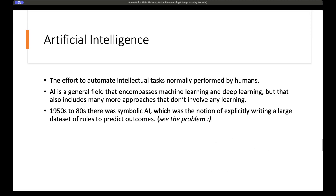So what is artificial intelligence? Artificial intelligence is simply an effort to automate intellectual tasks normally performed by humans. It encompasses machine learning and deep learning, but it also has aspects that do not involve learning at all. This is what used to happen back in the 1950s — early approaches involved programs written with explicitly hard-coded large sets of rules and expected outcomes, which was known as symbolic AI.